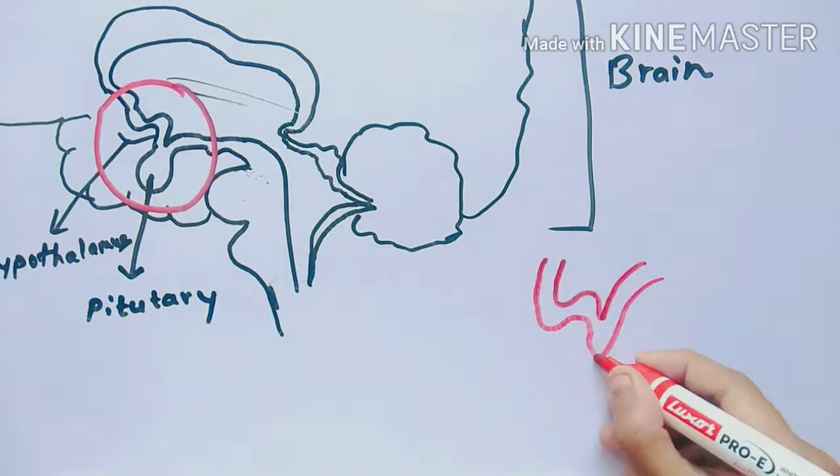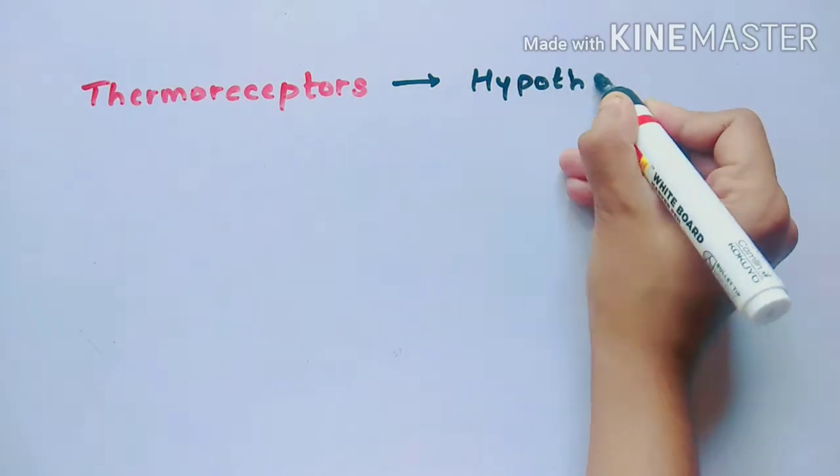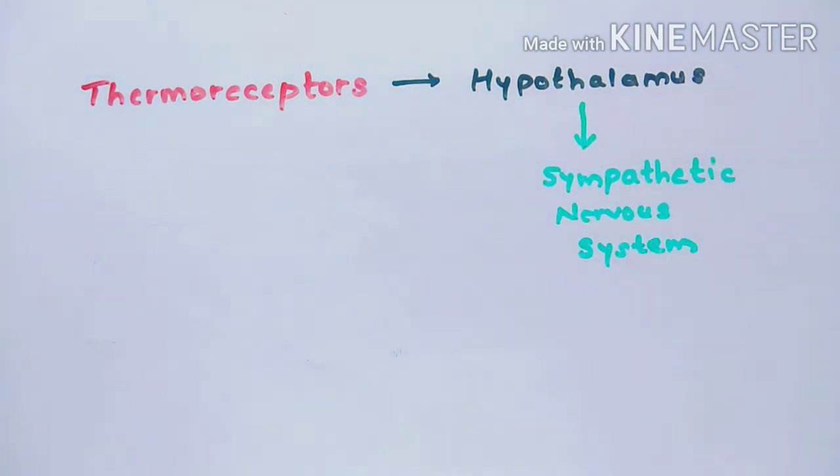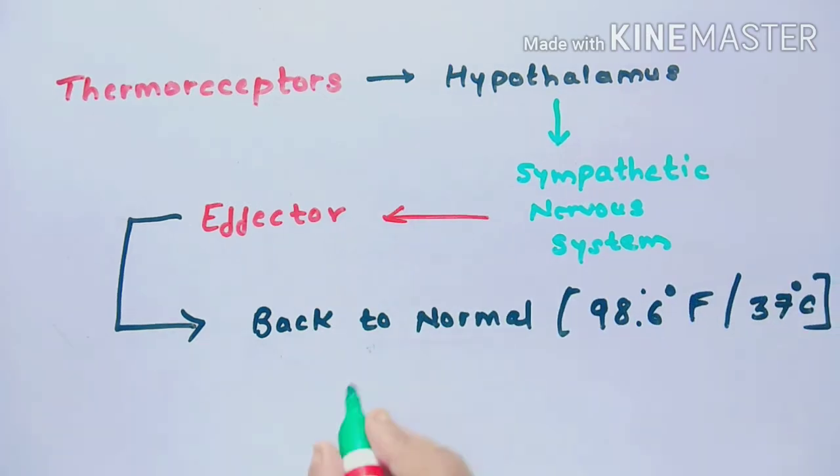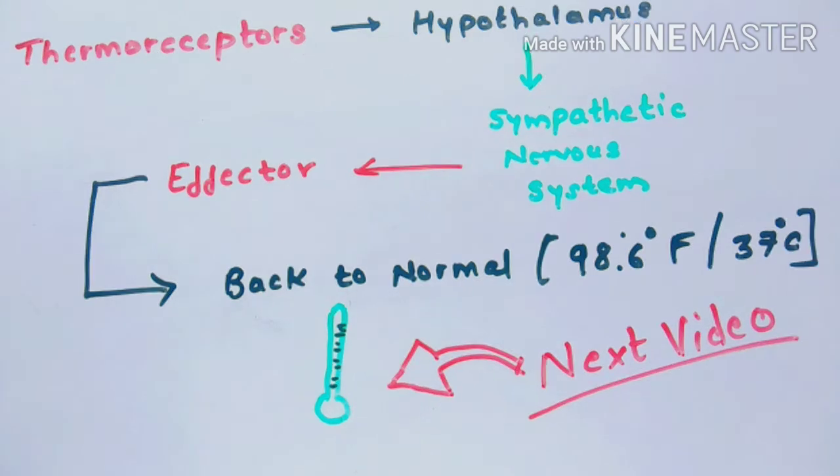The hypothalamus in the brain regulates body temperature and feedback about temperature from the body is carried through the bloodstream to the brain which results in compensatory adjustments to return the body temperature to normal. We'll talk about this phenomenon in upcoming videos.